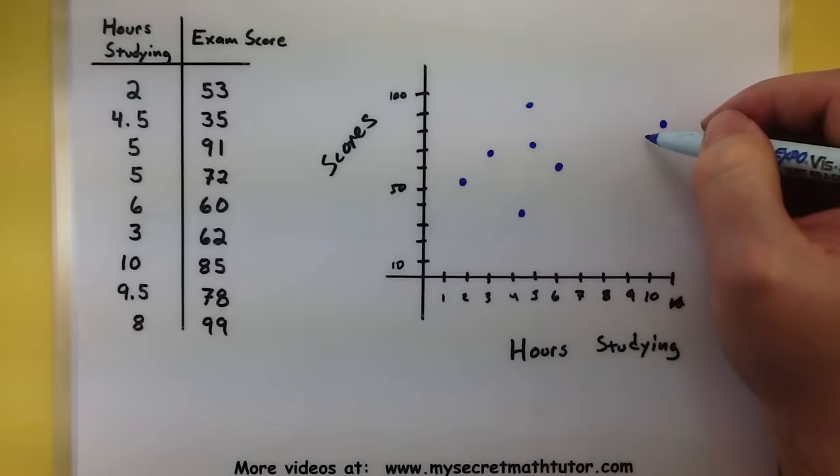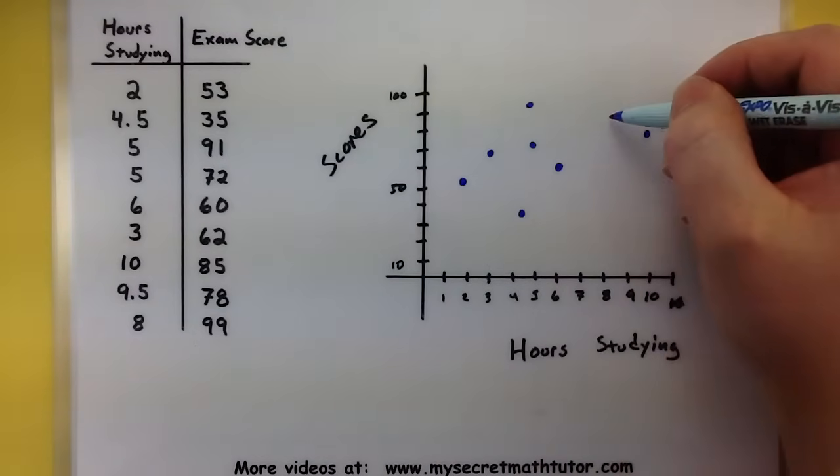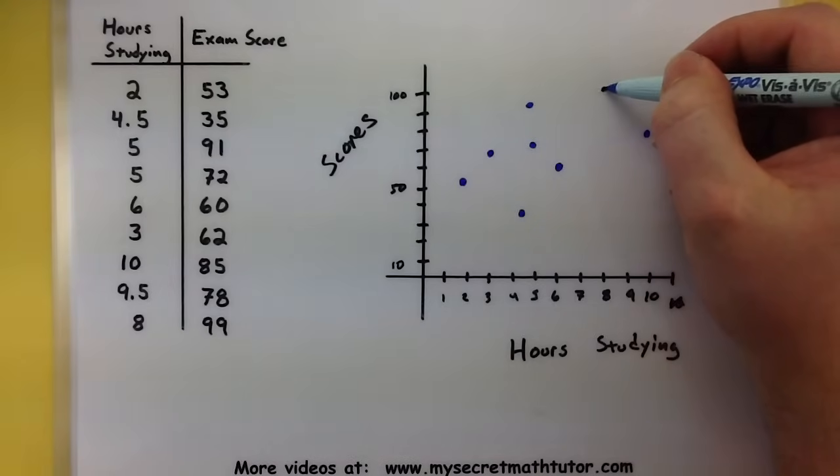So 50, 60, 70. Almost 80, but not quite. Let's see. One more. 8. Oh, they almost got a perfect score. 99. Way near here at the top.